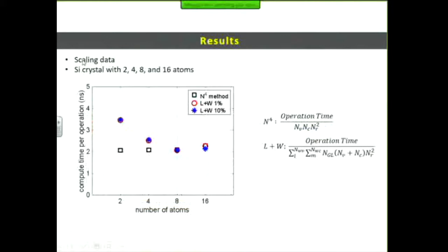We also wanted to verify that it scales as it should. I explored silicon crystals with 2, 4, 8, and 16 atoms. The Y-axis is compute time per operation. The N-to-the-fourth method is very flat, confirming it scales as N to the fourth. For the Laplace plus windowing method, for small systems it takes a little longer, but once the system size increases it scales as it should — nearly flat when normalized. We want to implement this new algorithm, especially Laplace plus windowing, into our OpenATOM software to enable very rapid use of the calculation.